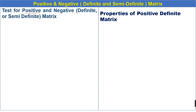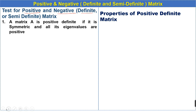We have some tests to identify whether the given matrix is positive, negative definite, or semi-definite. The first test: a matrix A is positive definite if it is symmetric and all its eigenvalues are positive. If the eigenvalues are not positive, then the matrix is negative definite or semi-definite. We will solve examples related to the first test in the next lecture.